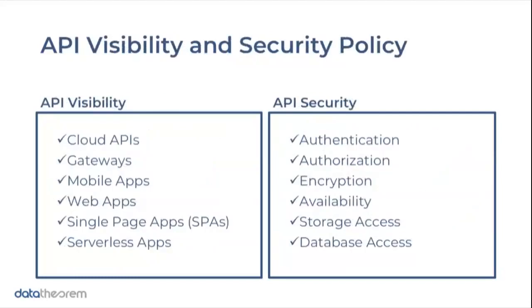On the API front, we have two categories to look at. First, do we have visibility into our APIs? Do we know all the APIs in all our cloud environments, gateways, mobile apps, web apps, SPAs, and serverless apps that are out there? Do we know the APIs that are collecting or transmitting data? Then, once we have that visibility, do we know what our security policy is around those APIs — covering authentication, authorization, encryption, availability, storage access, and database access — and are we continuously monitoring them?